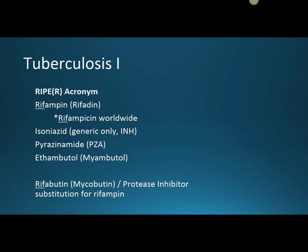The RIPE or RIPE-er acronym begins with Rifampin, brand Rifadin — though worldwide I see Rifampicin as the drug name. Isoniazid comes generic only, with the medical abbreviation INH. Then Pyrazinamide, abbreviated PZA, and Ethambutol, brand Myambutol. So R is Rifampin, I is Isoniazid, P is Pyrazinamide, E is Ethambutol.